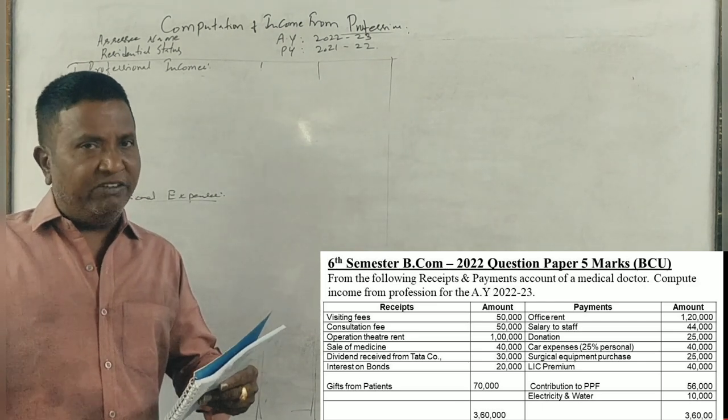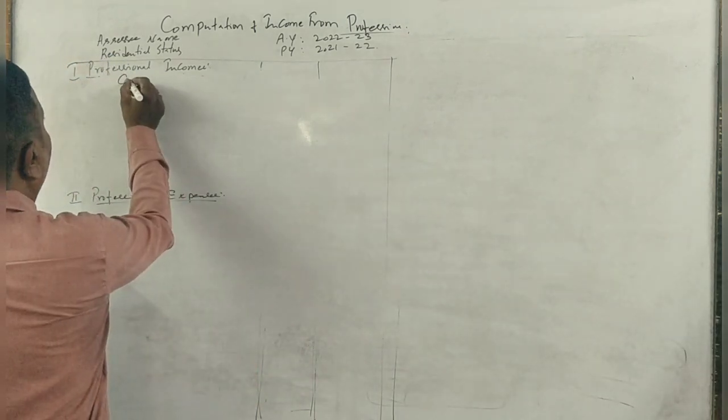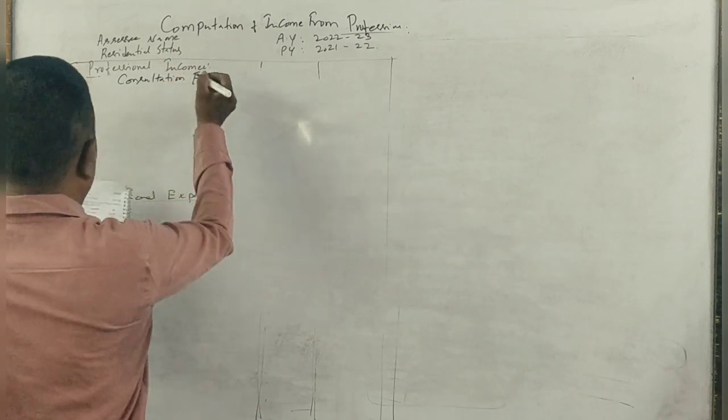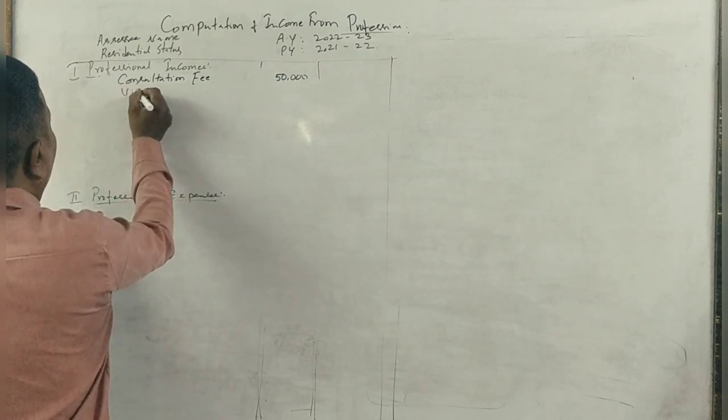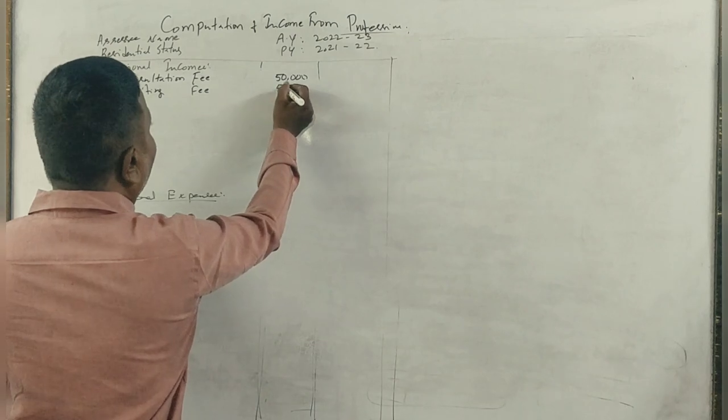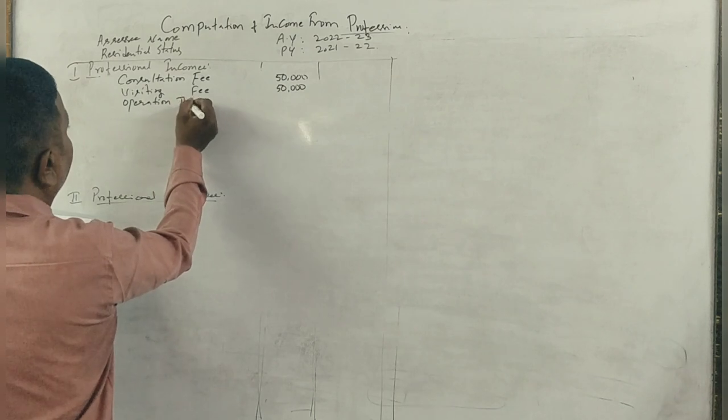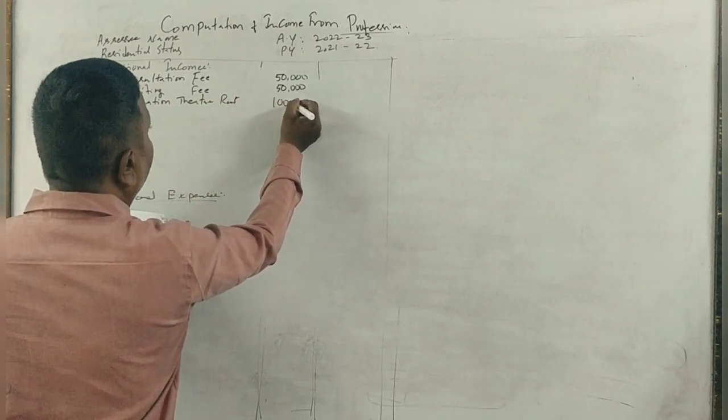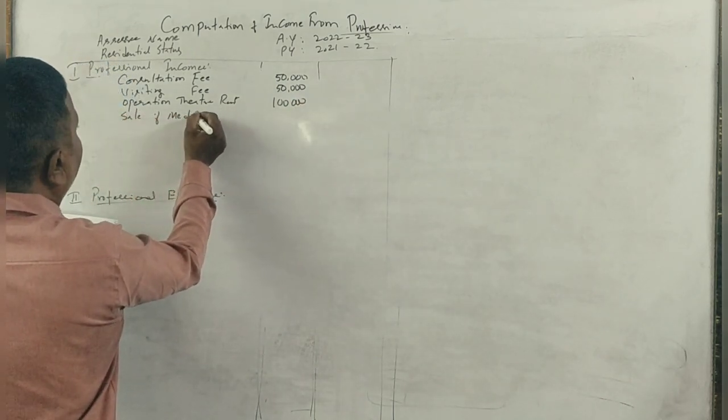Receipts and payments account of medical doctor, compute income from profession. This is a receipt of $50,000. Visiting fee, income. This is a receipt of $50,000.